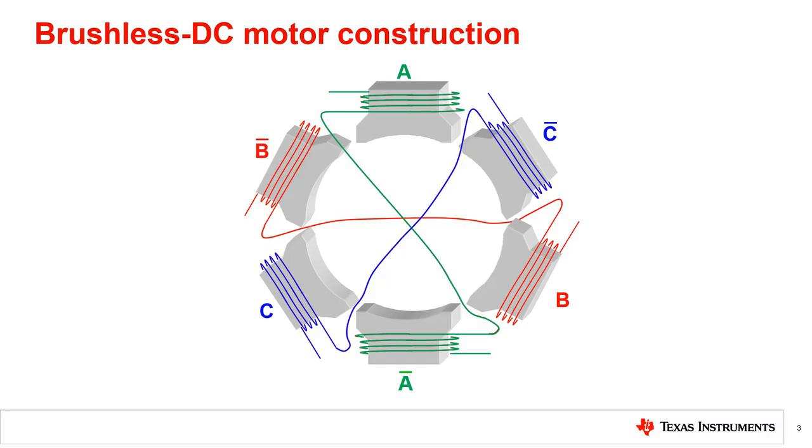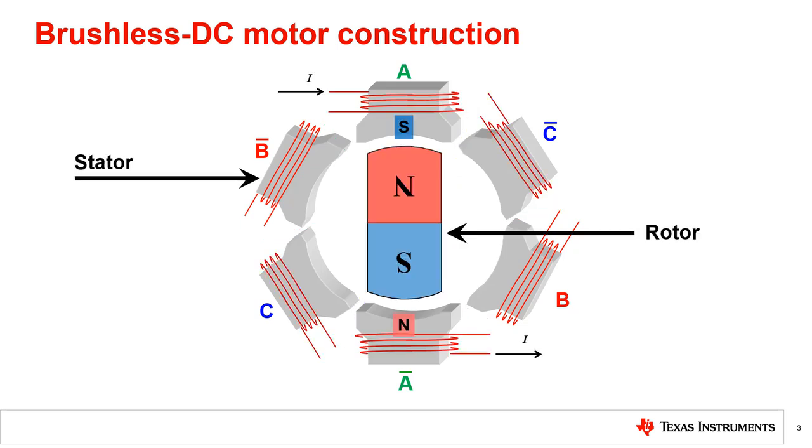To better understand the operation of a BLDC motor, let's first talk about its typical construction. This consists mainly of the stator and rotor components.